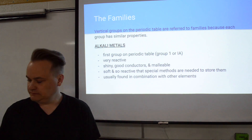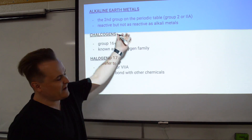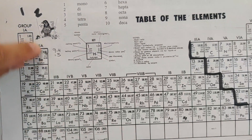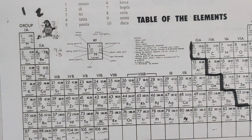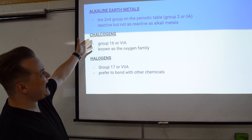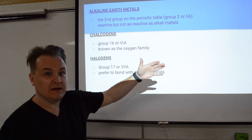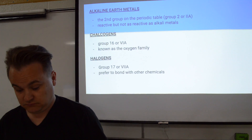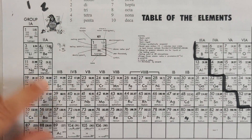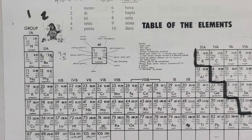Now let's look at the next family, the alkaline earth metals. They're reactive, but not as reactive as the alkali metals. They are still metals, and they have two valence electrons in their outer shell.